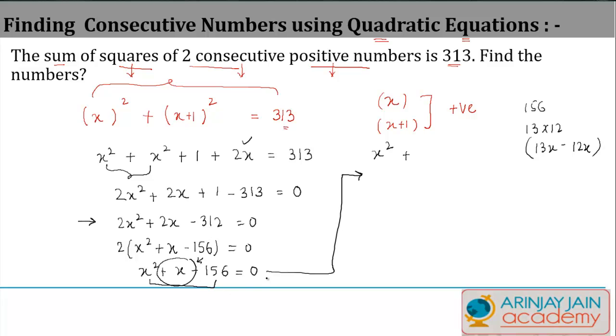So I will write this as x² + 13x - 12x, and then you had -156 = 0. I take x common here and I get x(x + 13).